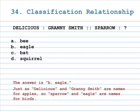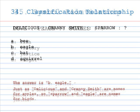Number 34: classification relationship. Delicious is to Granny Smith, as Sparrow is to A. B. Eagle, C. Bat, D. Squirrel. The correct answer is B, Eagle. Just as Delicious and Granny Smith are names for apples, so Sparrow and Eagle are names for birds.